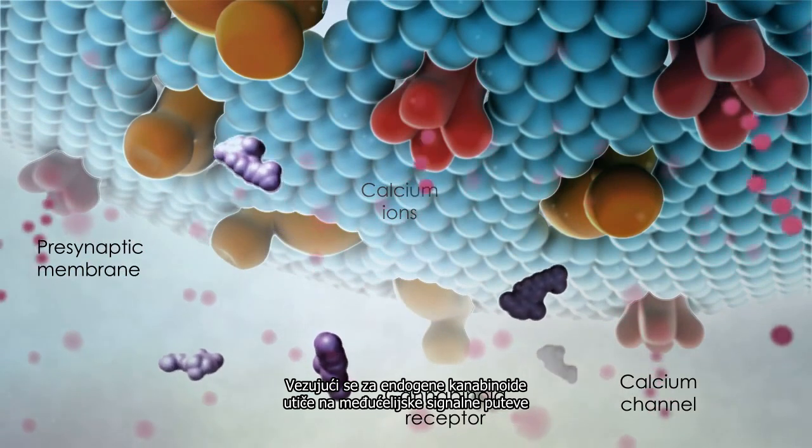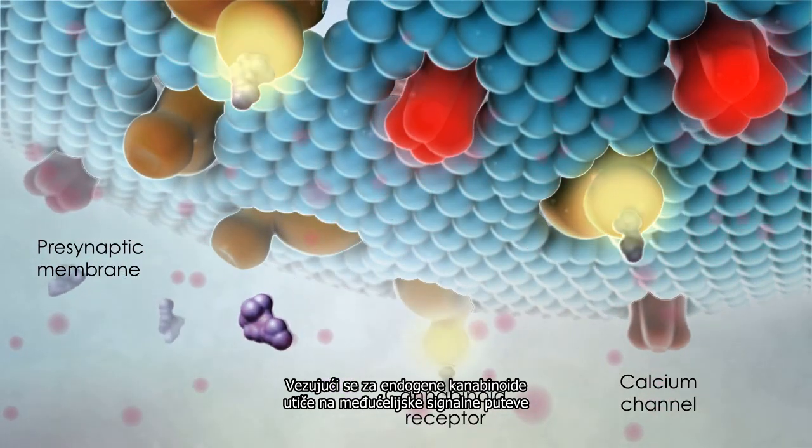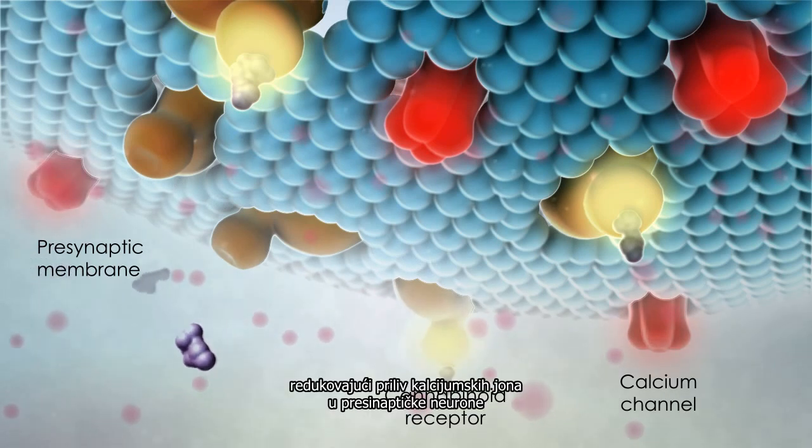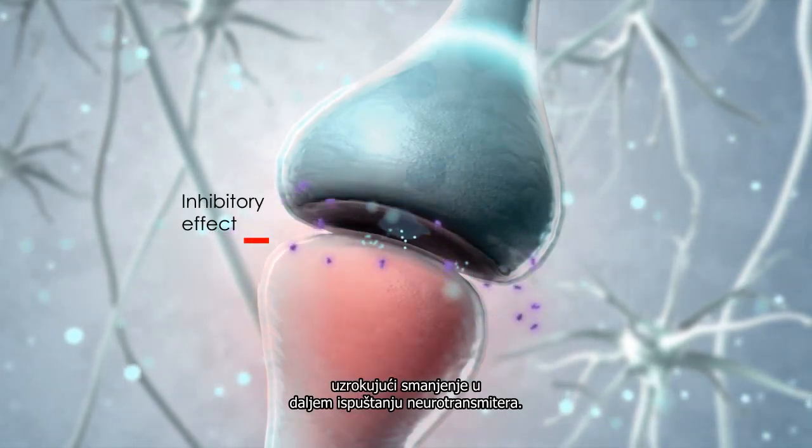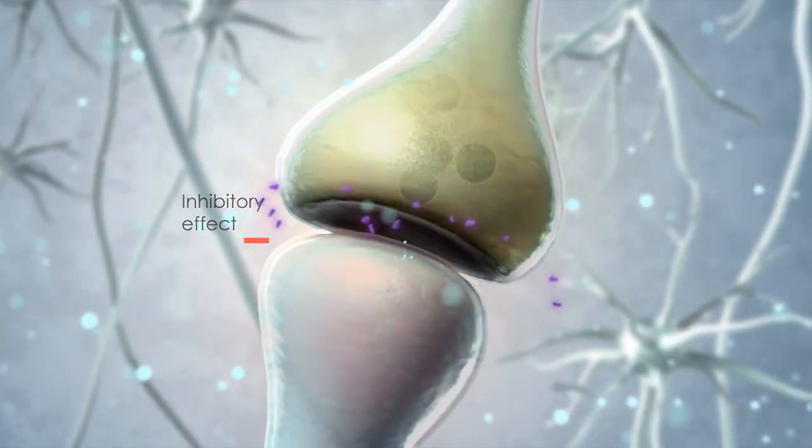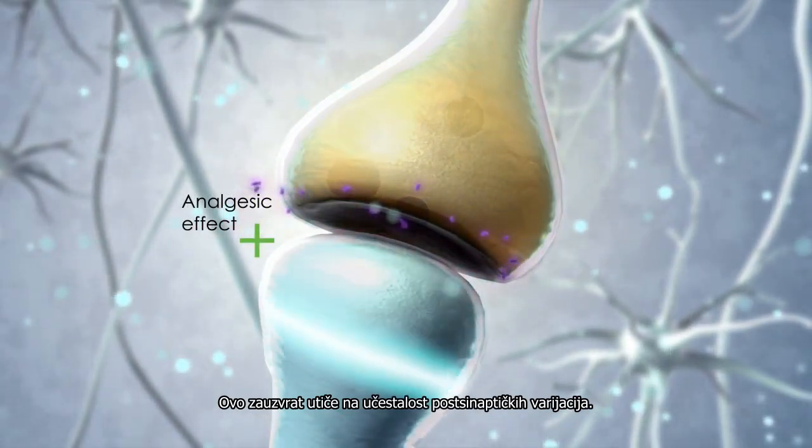Binding of the endogenous cannabinoids affects intracellular signal transduction pathways, reducing the influx of calcium ions into the presynaptic neuron, causing a decrease in further neurotransmitter release. This, in turn, influences the frequency of postsynaptic firing.